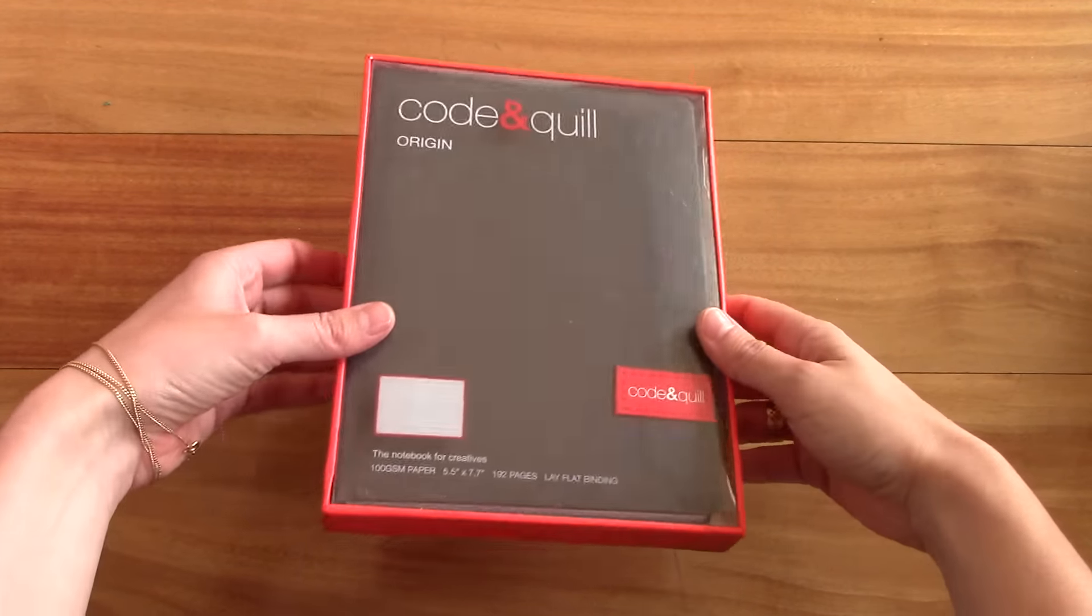It is a hardcover notebook and it has this interesting texture as you can see. Here's the logo stitched onto the cover, Code & Quill. It has rounded edges, here's the spine binding, and there's the back.